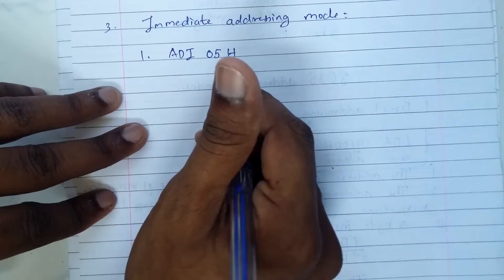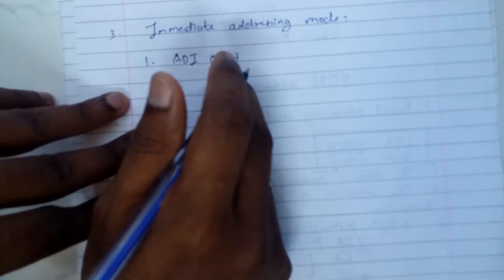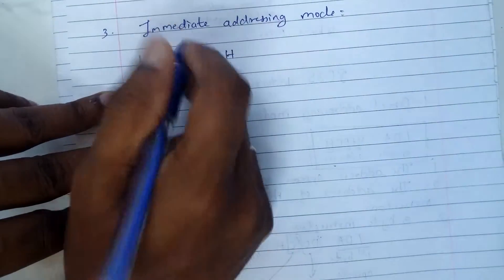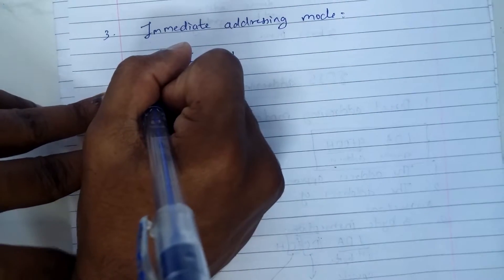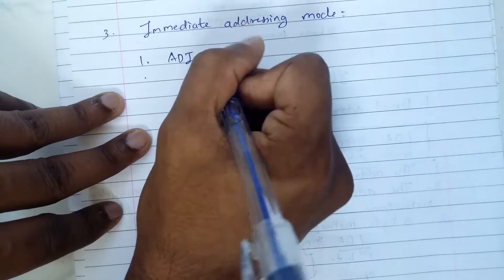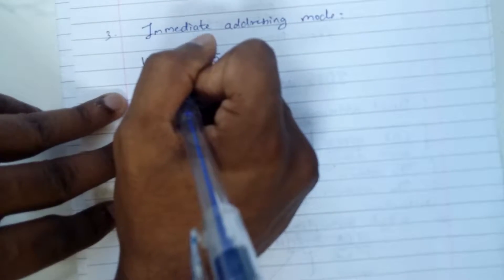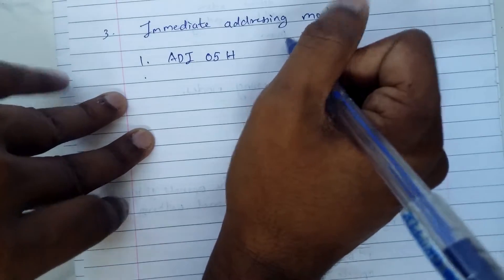The first one I'm going to explain is what this instruction actually does. This instruction will add the data immediately of 05H to the content of the accumulator A, and the result will be stored in the accumulator.